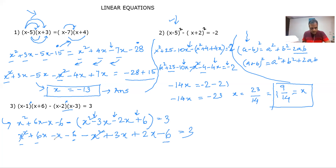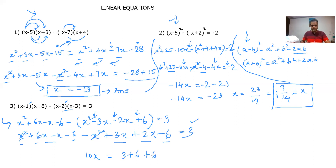Now combining like terms: 6x + 3x + 2x. 6x minus... wait: 6x − x is 5x, plus 3x is 8x, plus 2x is 10x. So we have 10x. This equals 3, and bringing −6 to the right gives +6. So 10x = 3 + 6 = 9... actually 3 + 6 = 9, giving 10x = 15. So x = 15/10 = 3/2.